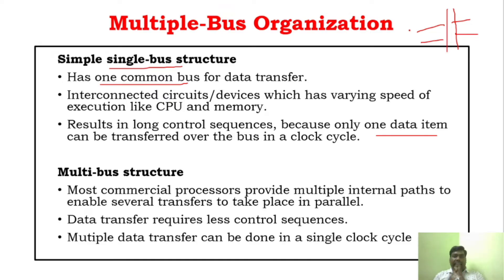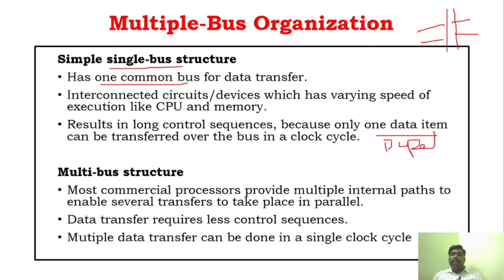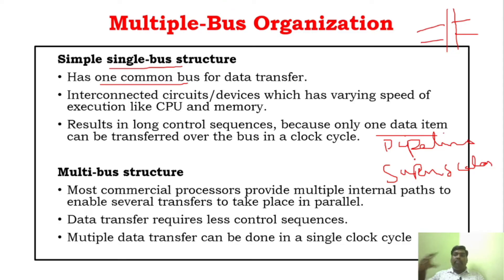In modern processors — from i5, i7, i10 — for every generation the speed of the processor increases. There are broadly two techniques to improve processor speed: one is pipelining operation, and another is superscalar operation. If you perform operations in parallel instead of one by one, it executes faster — that is the core concept.